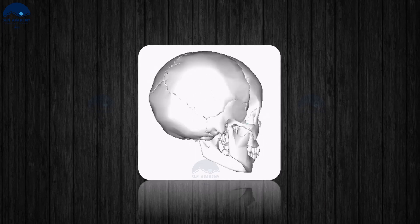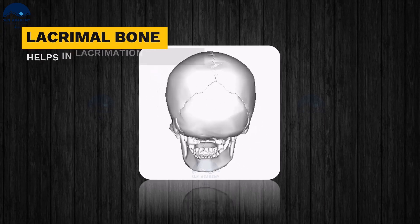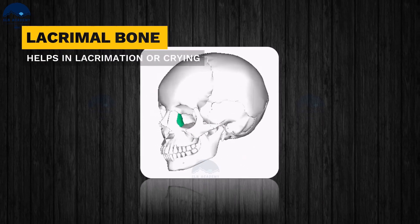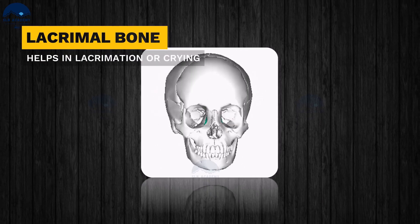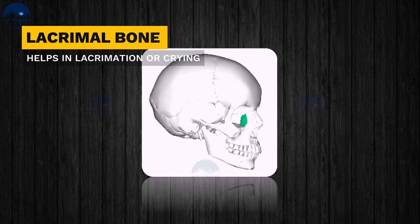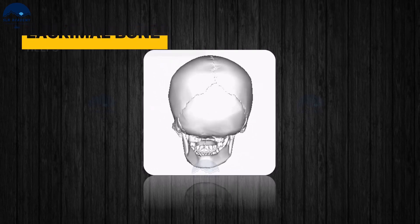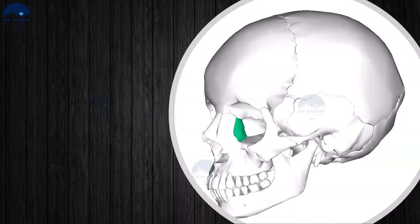Lacrimal bones. There are two lacrimal bones in the human skull. They are the small bones in the nasal cavity. They help in lacrimation, or crying.